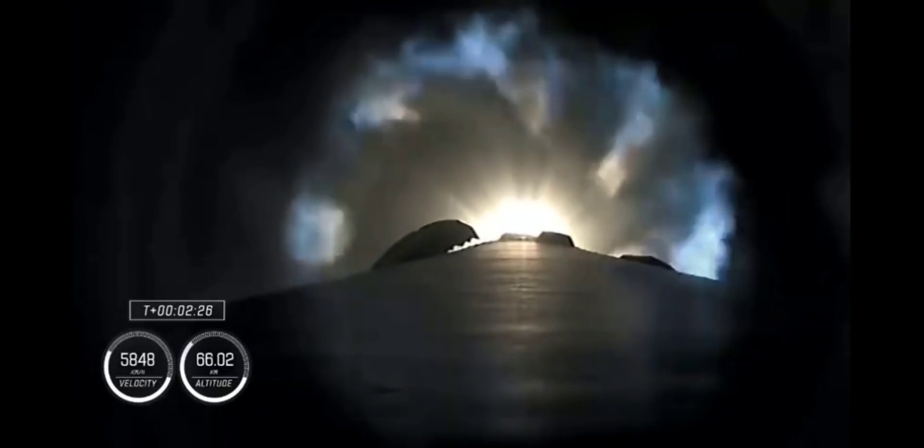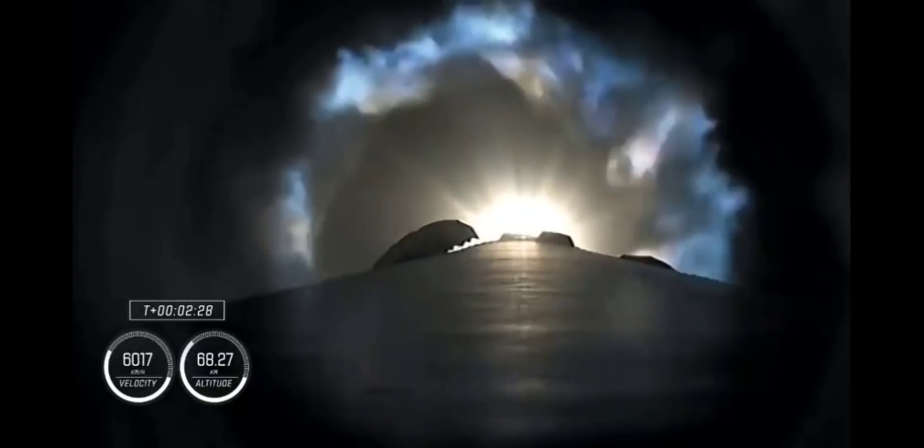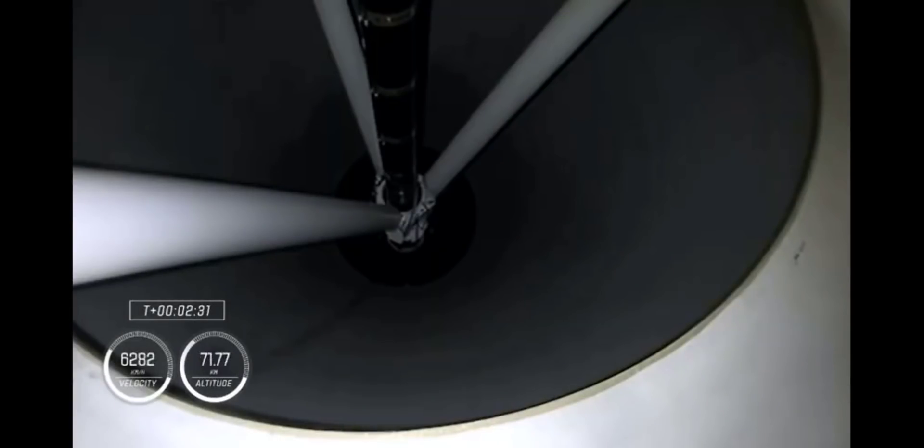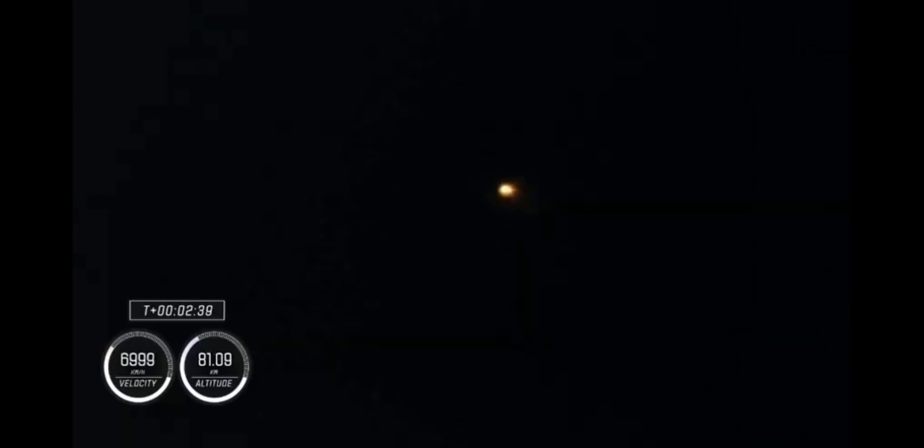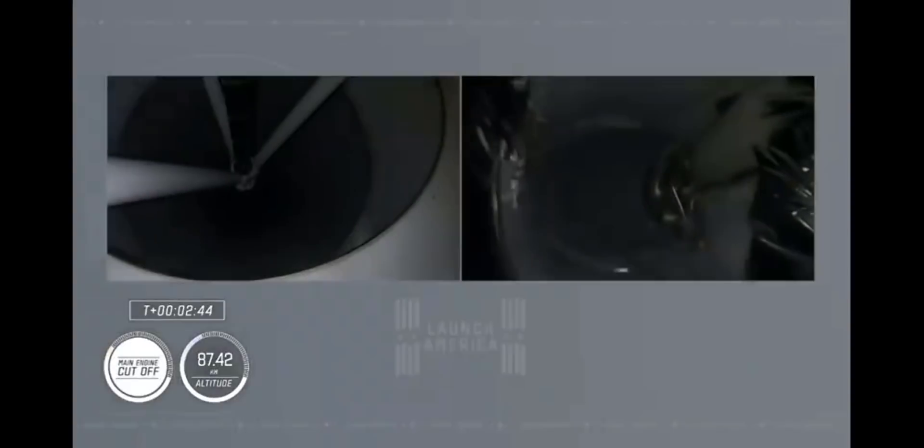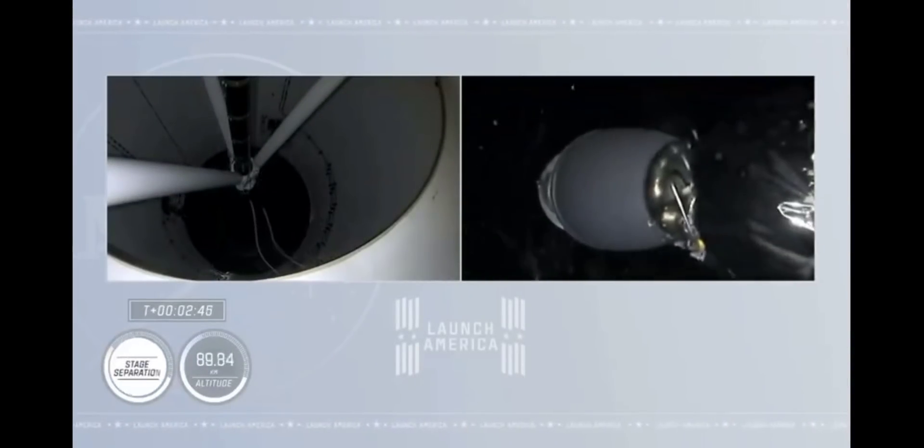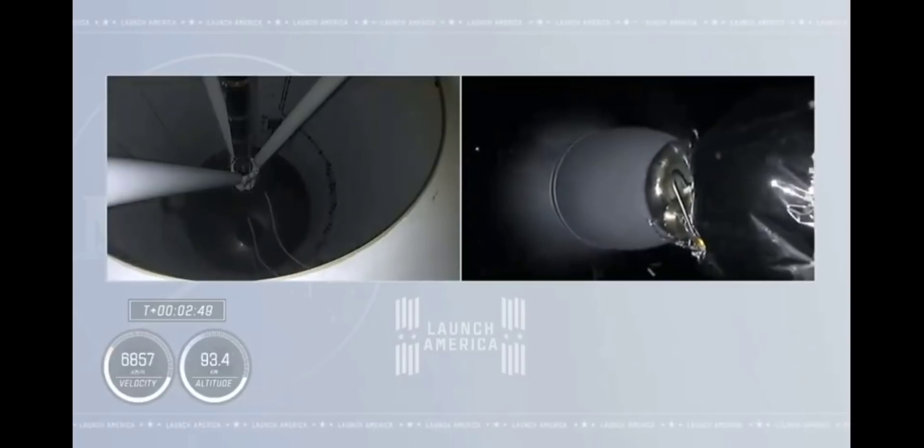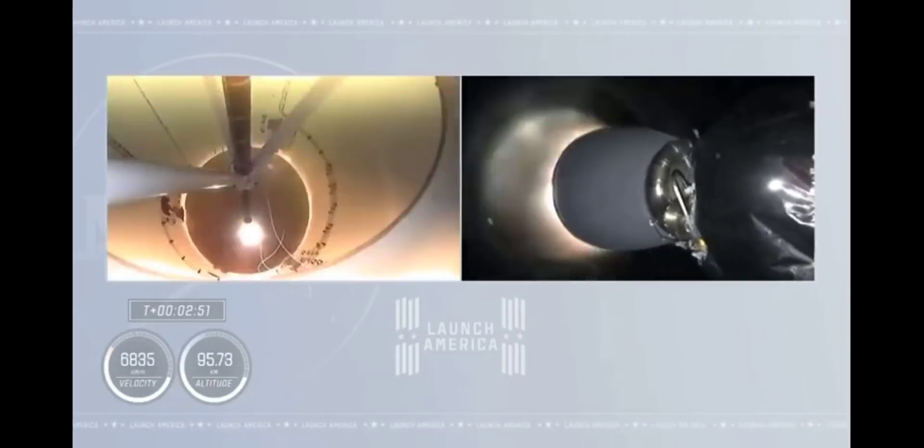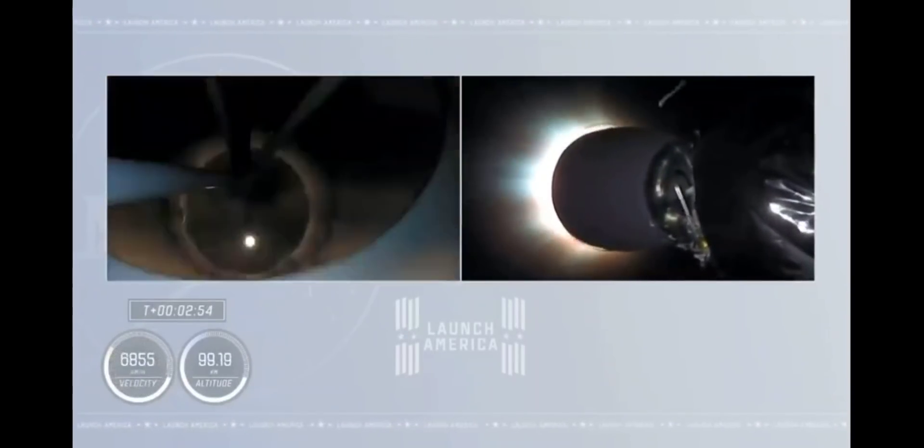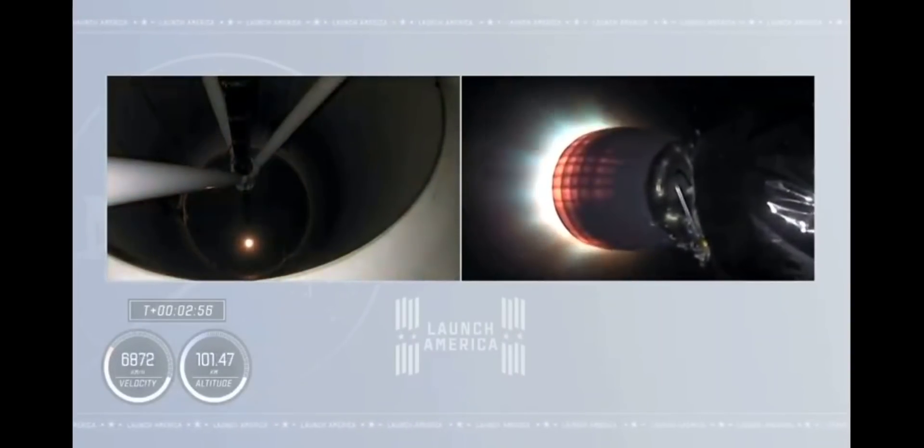We've begun the throttle down in preparation for stage separation. And you see that stage separation has confirmed. There goes that MVAC engine. Stage 2, crew 1, is now on their way to the International Space Station.